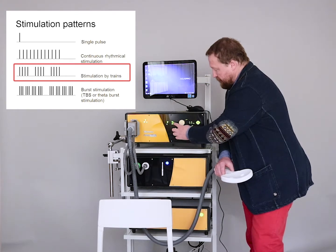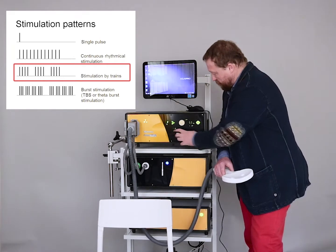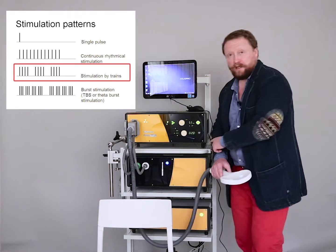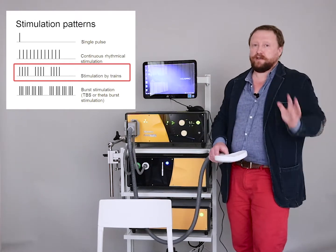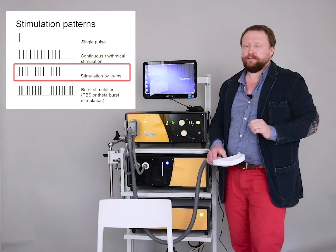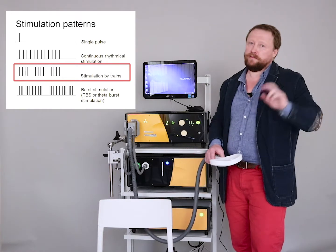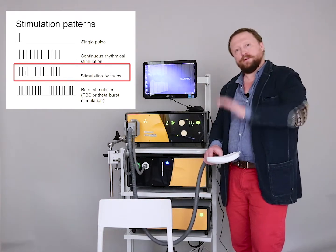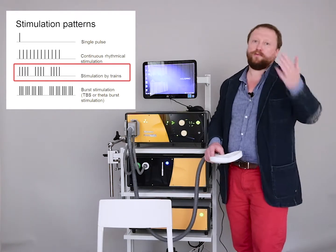And then I can start stimulation. Now it will stimulate 9 pulses per second. It will make a 3-second train, and then a 2-second pause — 3 seconds train, 2 seconds pause — and so on and so forth.